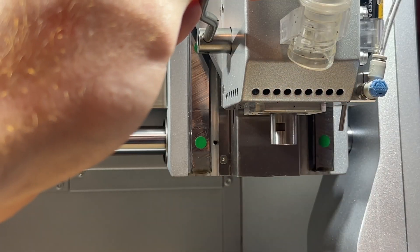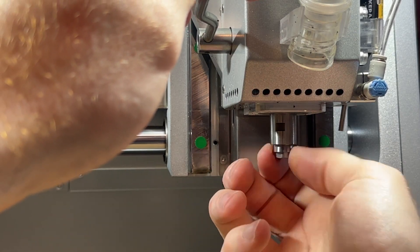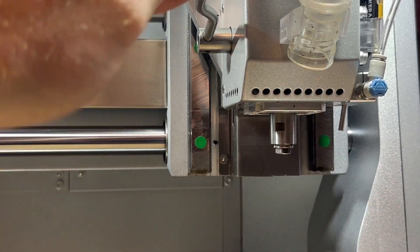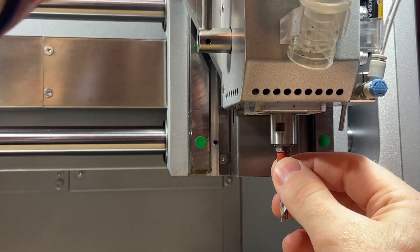You can also replace the spindle collet so that you can load bits with shank diameters from 3 millimeters to 6.35 millimeters, or eighth inch to quarter inch too.